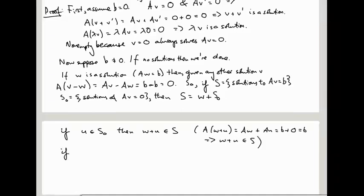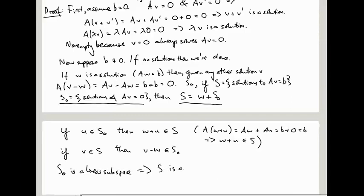And conversely, what we showed up here was if V is in S, then V minus W is in S0. That's what we showed on the previous line. And those two implications tell us that S is W plus S0. S0 is a linear subspace by part A up here, where we assume that B is 0. And therefore, S is an affine subspace.